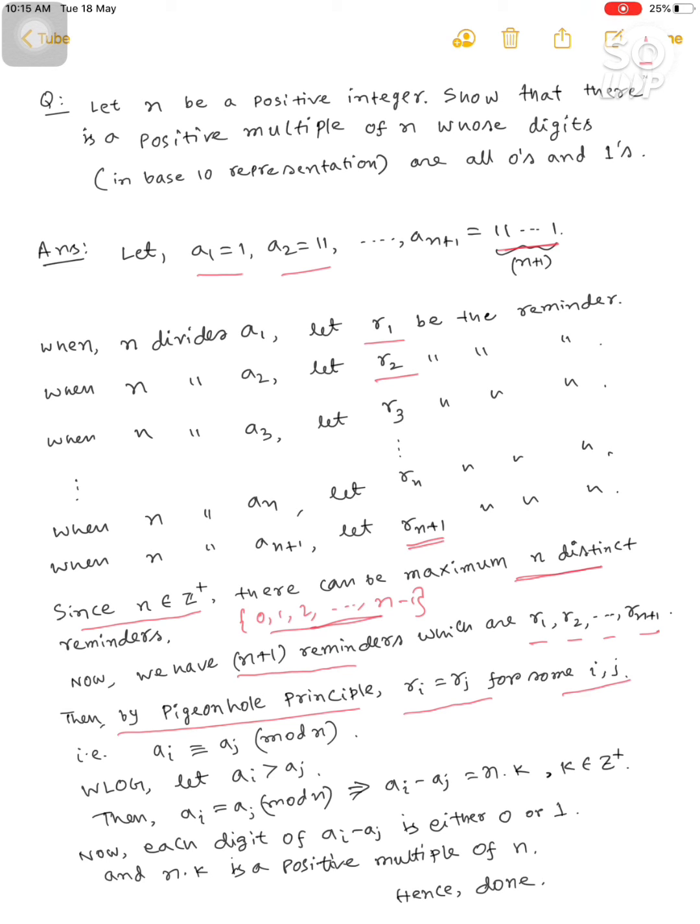This implies a_i is congruent to a_j mod n. This is obvious. Now, we are considering without loss of generality, let a_i be greater than a_j.